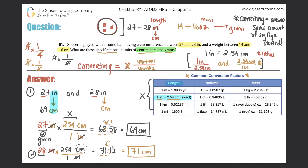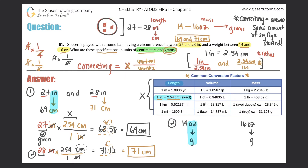So the circumference in centimeters is between 69 and 71 centimeters. Now for part two: we need to find what 14 and 16 ounces are in grams. I go to the chart and look under mass for a conversion between ounces and grams.